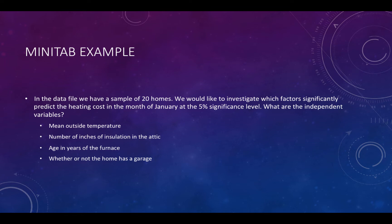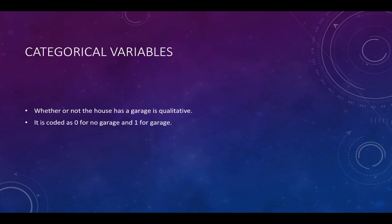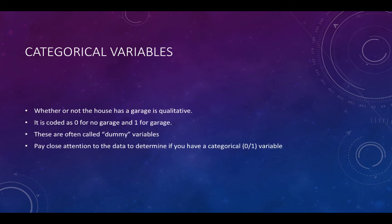When looking at the data, we notice that the garage column looks different than the other columns — we only see zeros and ones. We need to talk about how to handle categorical variables, also called qualitative variables, meaning they do not represent numerical data. Whether or not a house has a garage is qualitative — it is coded as zero for no garage and one for garage. These are often called dummy variables. You need to pay close attention to the data to determine if you have a categorical or zero-one variable.